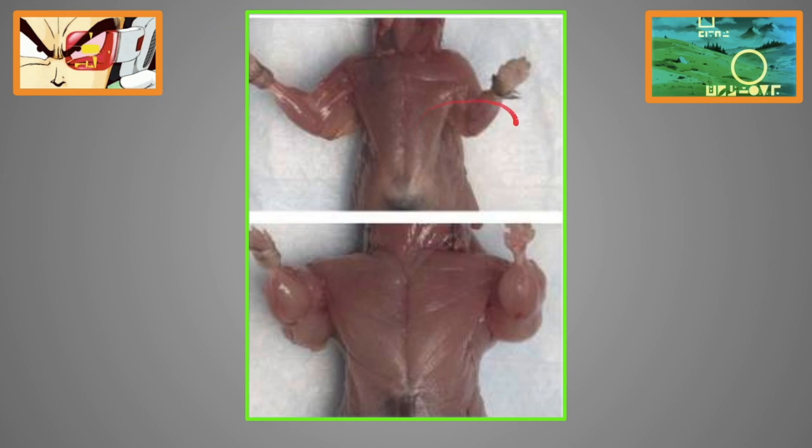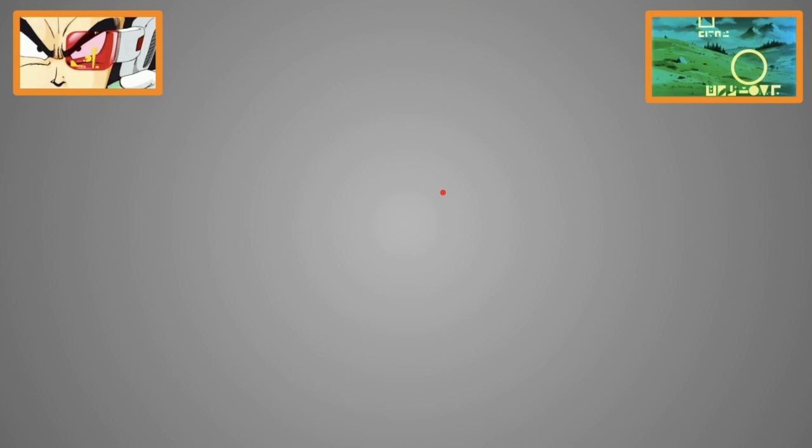And if you watch my other videos on myostatin, you're already familiar with the different examples on what scientists have done in the lab. For example, this mouse here is lacking the myostatin gene and is genetically engineered to overproduce follistatin. So you can clearly see the difference in size, four times the amount of muscle mass.